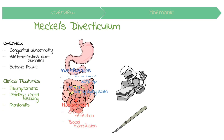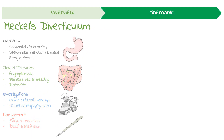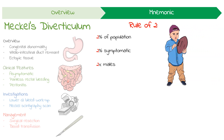To help you remember some of these facts about Meckel's diverticulum, think of the rule of two. It occurs in two percent of the population. Of those, two percent become symptomatic. Two times more males are affected than females.